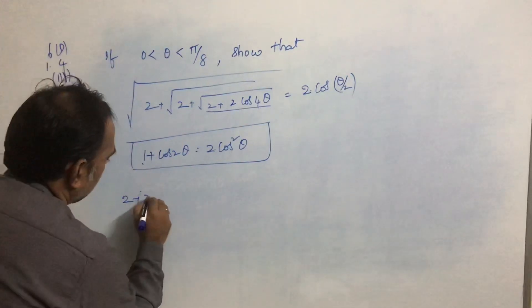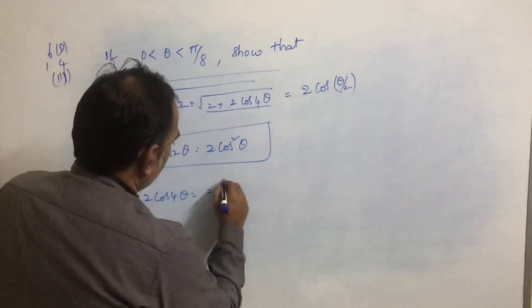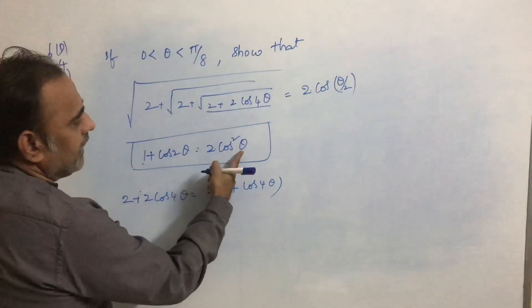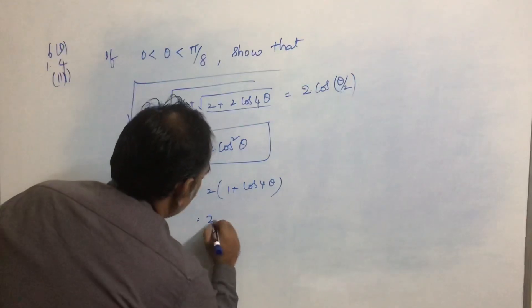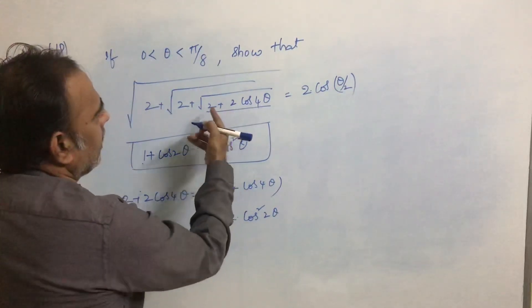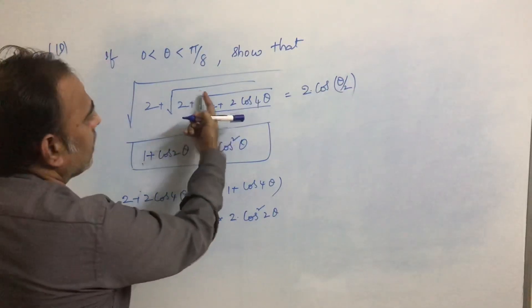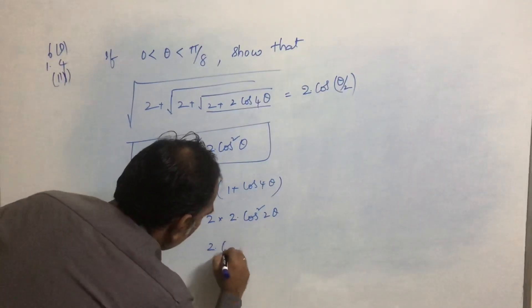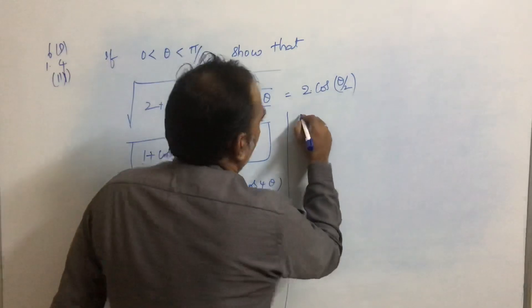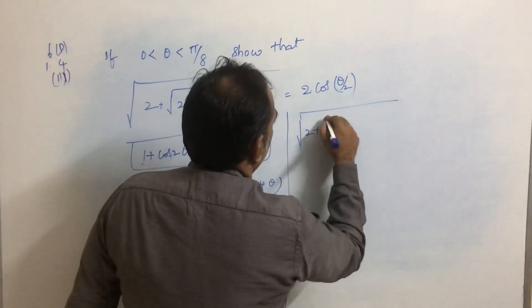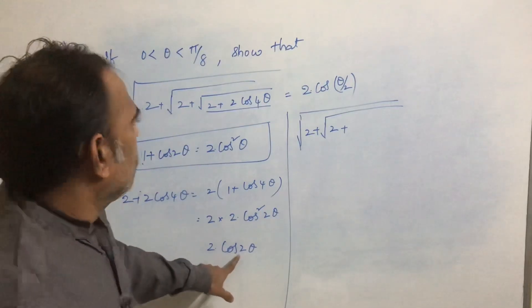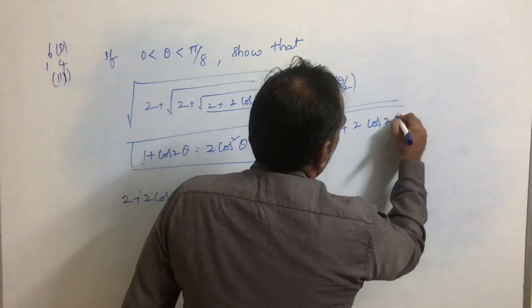Now take the innermost term first: 2 + 2cos4θ. Take 2 common to get 2(1 + cos4θ). Here 2θ in the formula corresponds to 4θ, so this equals 2 × 2cos²2θ = 4cos²2θ. Applying the square root gives 2cos2θ. So the expression becomes √(2 + √(2 + 2cos2θ)).